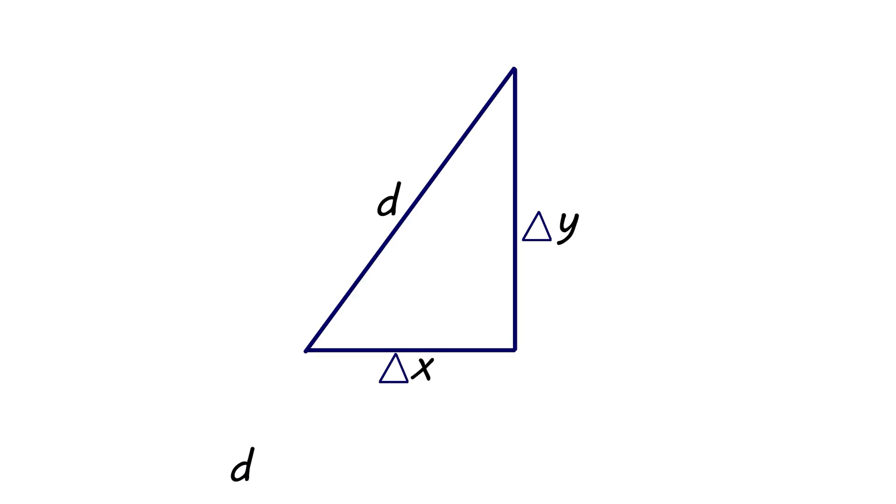The Pythagorean theorem is applied to find the tourist's displacement. The square of the magnitude of the displacement is equal to the sum of the square of the horizontal displacement and the square of the vertical displacement. In this way, you can find out the magnitude of the displacement, d.